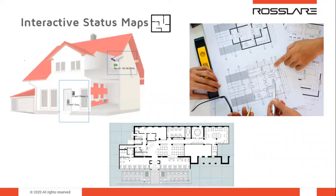Status maps is a very advanced and useful feature. It creates a graphic display of the statuses of every door, reader, input, output, and alarm in the facility, displayed on user-selected floor plans or images. The system can display multiple nested status maps, allowing users to show either the complete access control network or a specific area in detail.